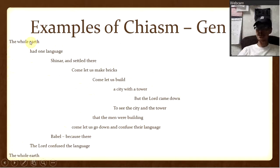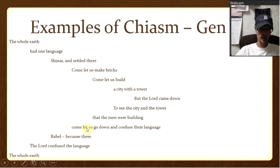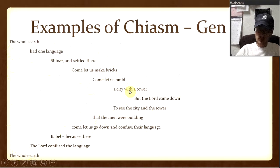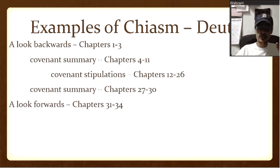See how chiasm works? It kind of has this shape — it looks like a half of an X. And it actually happens quite frequently in the Bible. Genesis 11 is one example.